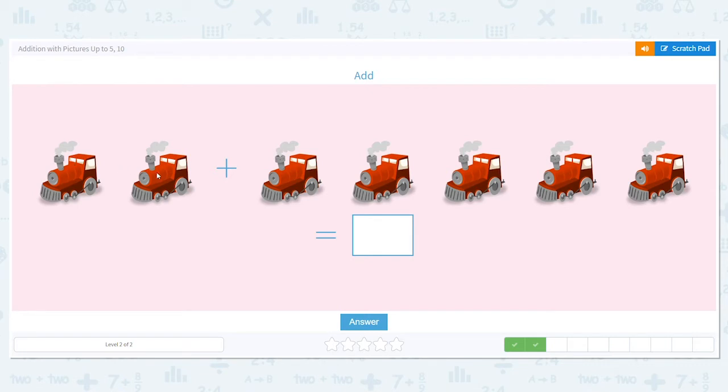1, 2, 3, 4, 5, 6, 7. So how many total trains do we have? 7. Great job.